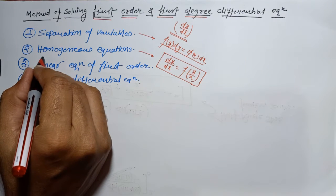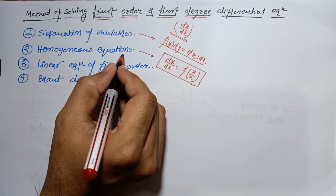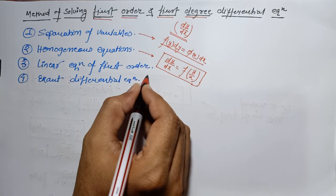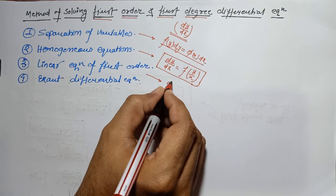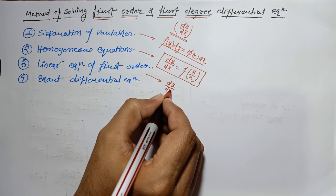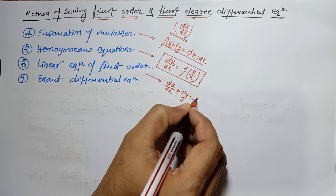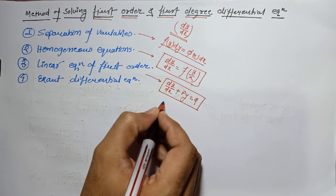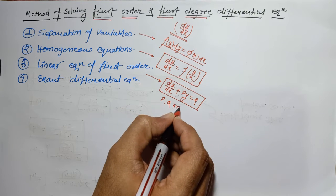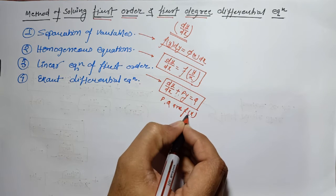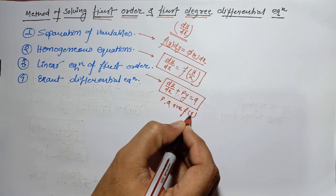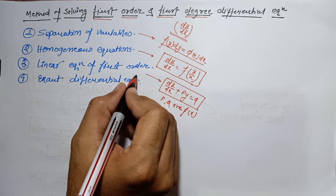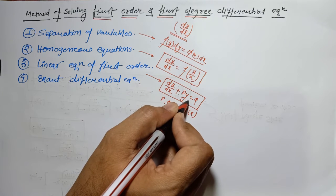The second method is using the homogeneous differential equation method. The third method is the linear equation of first order. If we have a differential equation dy/dx + P·y = Q, where P and Q are functions of x only, this type is called a linear differential equation of first order.